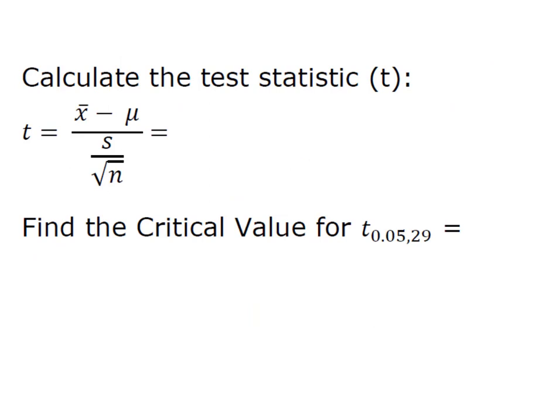Under a critical value approach, we're going to do two things. We're going to calculate a test statistic and find a critical value, and then we're going to compare those to make the decision about our hypothesis.